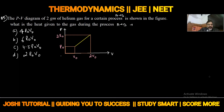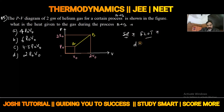Next question: The P-V diagram of 2 grams of helium gas for a certain process A to B is shown in the figure. What is the heat given to the gas during the process A to B? We need to calculate heat given in this A to B process. To solve heat given, we need the help of the first law of thermodynamics. Helium gas is a monoatomic gas.